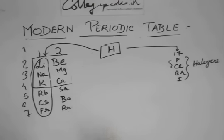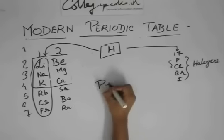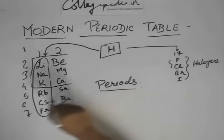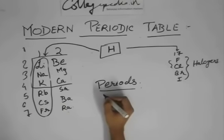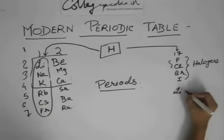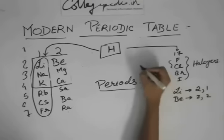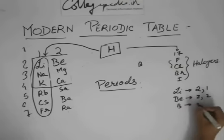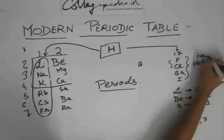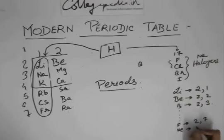Now we come to what are called periods — these rows are the periods. The characteristic property of periods: if you see lithium's configuration, it's 2,1; beryllium is 2,2; then boron which is 2,3; then other elements; then fluorine which is 2,7; and then neon which is 2,8.